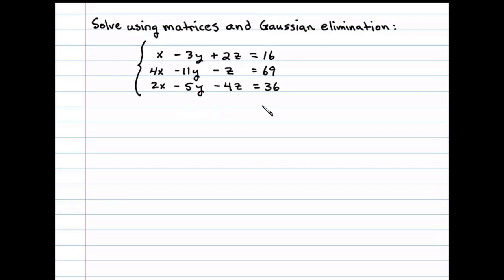Here we're asked to solve a linear system using matrices and Gaussian elimination. Let's begin by finding the corresponding augmented coefficient matrix. Now the goal is to find an equivalent matrix in upper triangular form, so we'll use the elementary row operations.